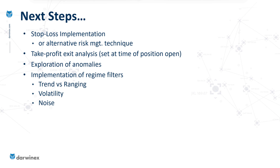The next thing is the implementation of regime filters — things like trend or ranging type indicators to give you an idea of what the market is doing at the time you open a trade. The RSI and stochastic RSI strategies are based on a mean reverting premise, so they will often work best in a ranging market rather than in a strongly trending market. Other regime filters look at volatility — you can analyse how well your strategy performs in high, medium, and low volatility environments, and likewise for market noise. I've produced numerous videos on all of these regime filters in the past.